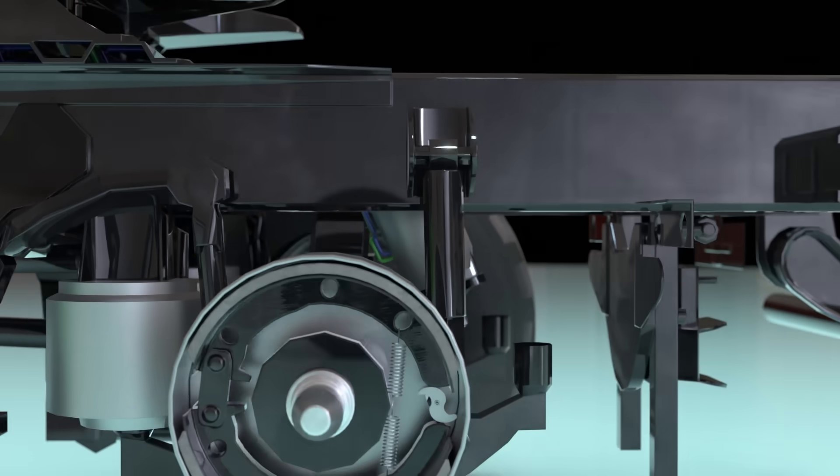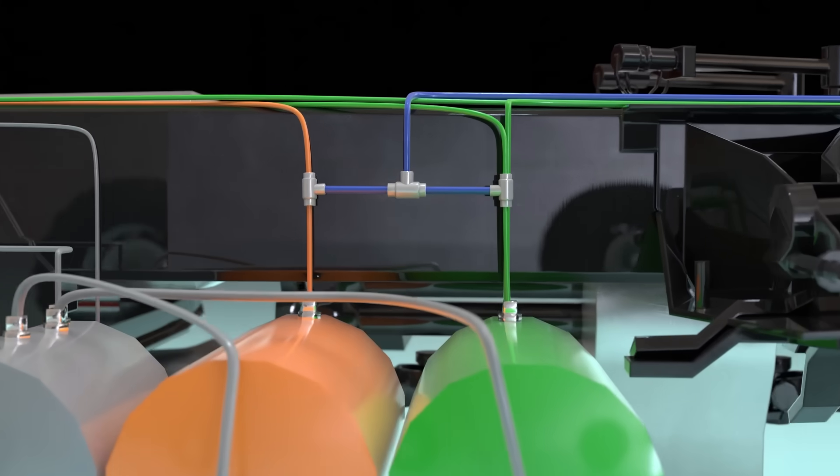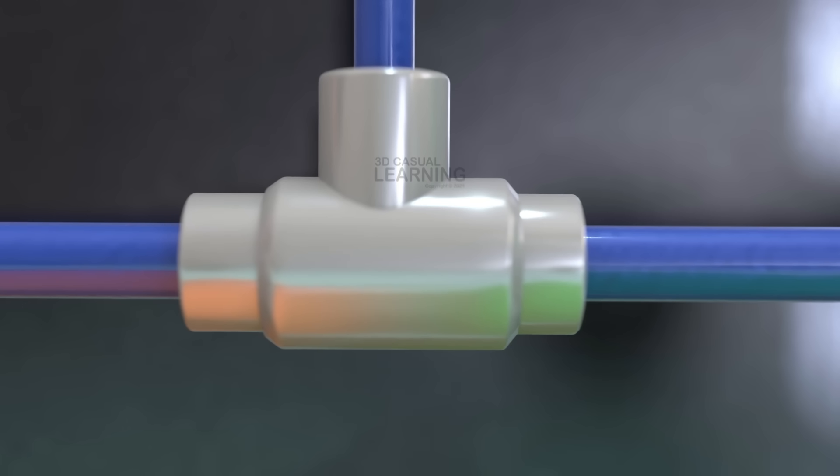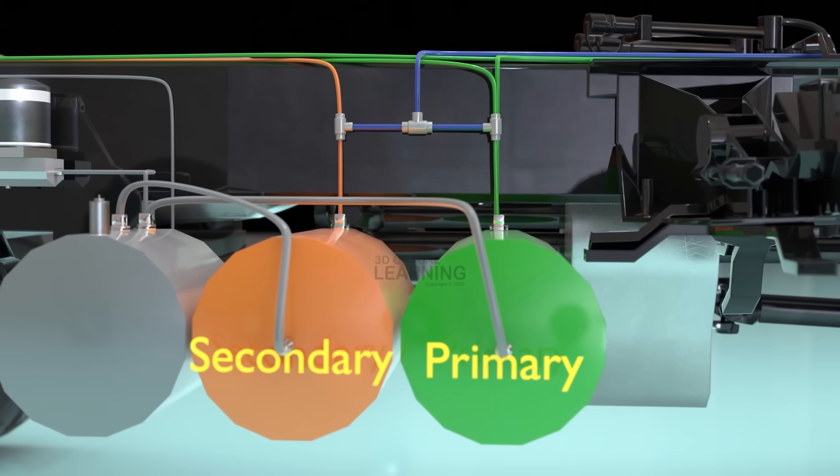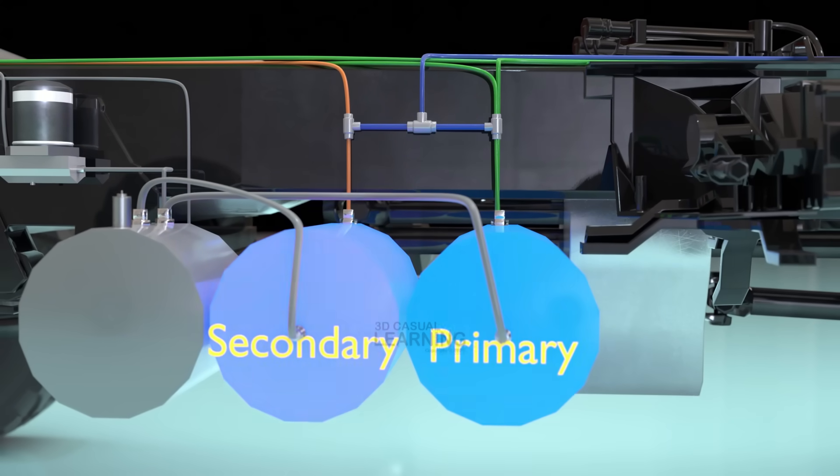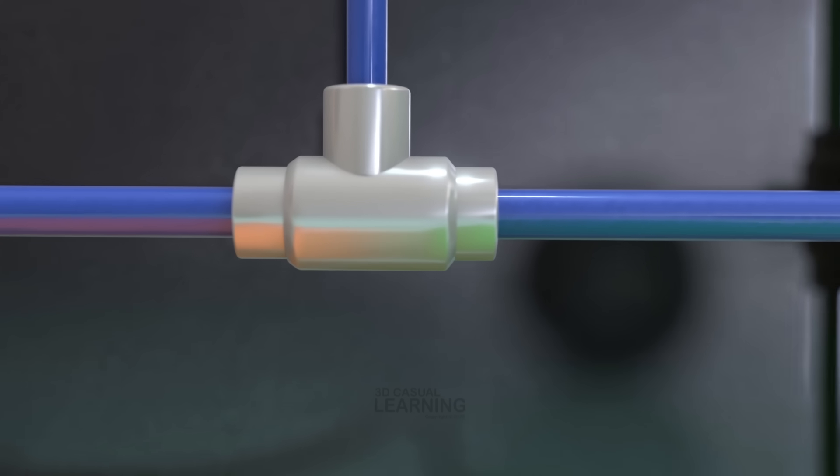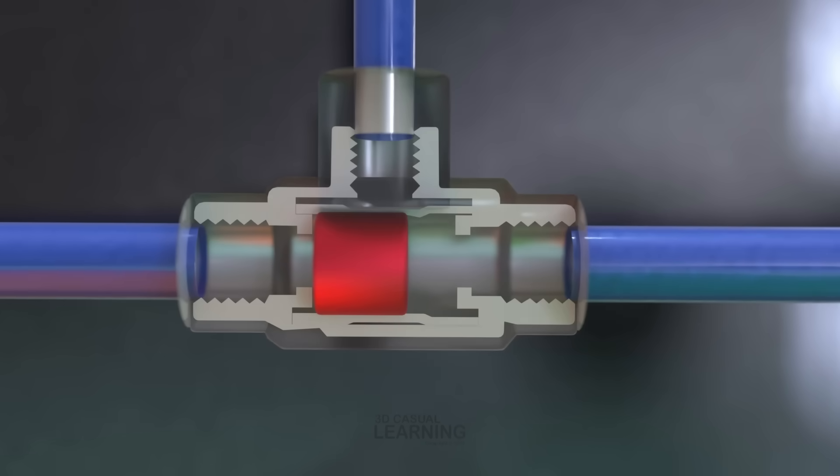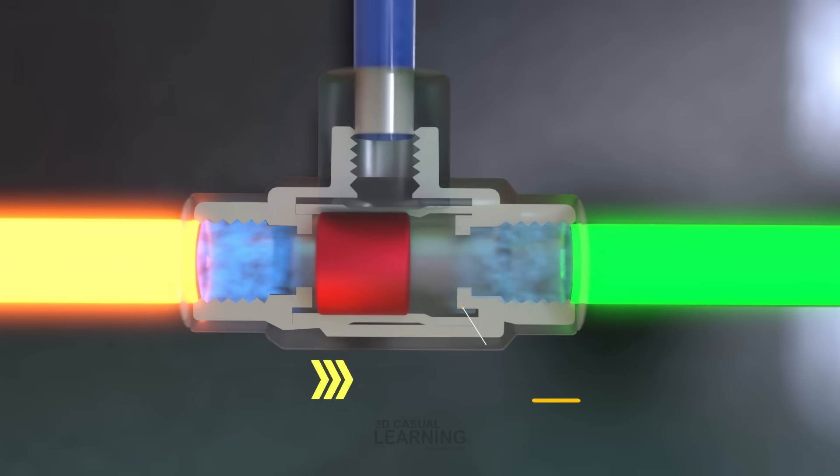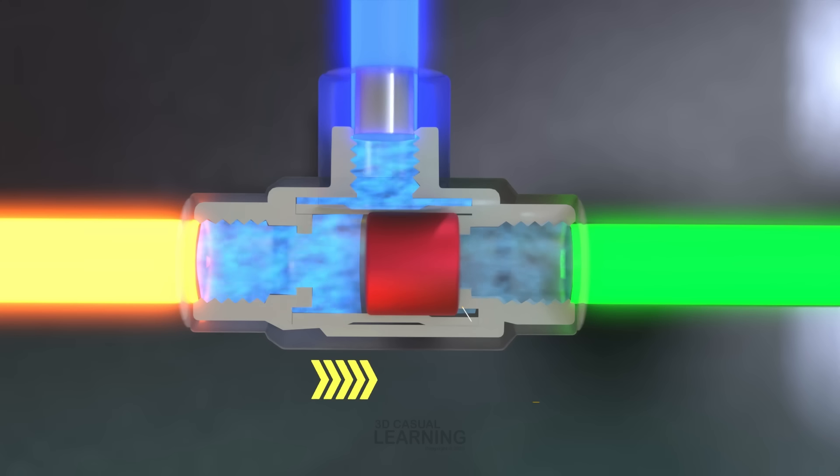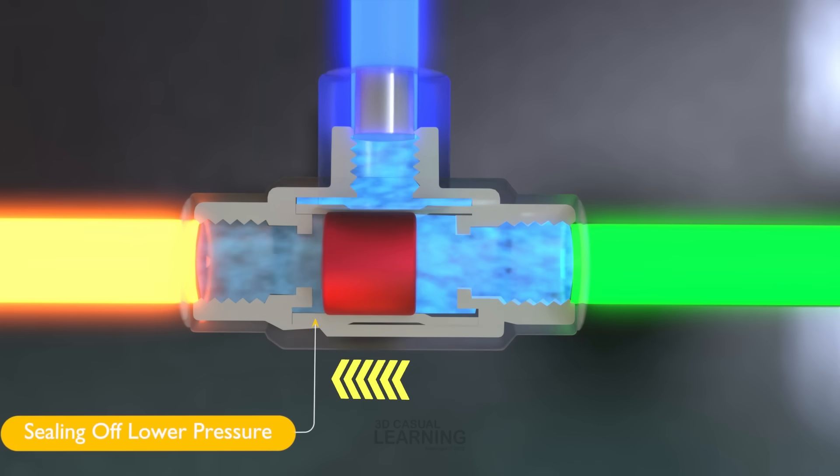The first component to consider is the double-check valve. This valve serves two purposes. It directs airflow to specific functions and selects the higher pressure from two possible sources. For example, parking brakes can be controlled using air from either the primary or secondary reservoirs. The most common design uses a shuttle housed in a guide inside the valve body. It has two inlet ports and one delivery port. When air enters one of the inlets, the shuttle moves in response to the pressure, sealing off the port with lower pressure while allowing air to flow through the delivery port. If pressure levels change, the shuttle automatically reverses its position without obstructing airflow.